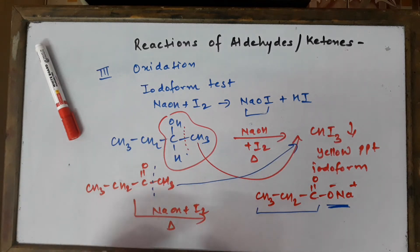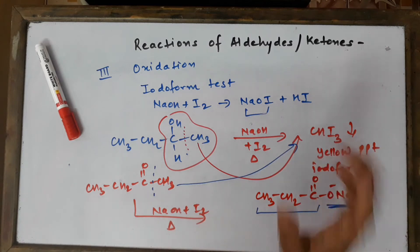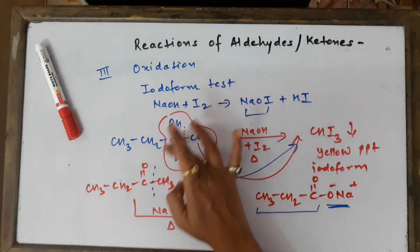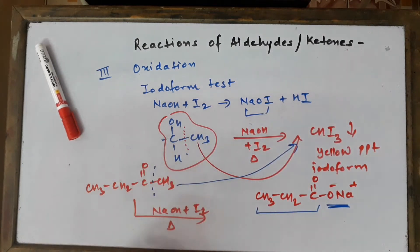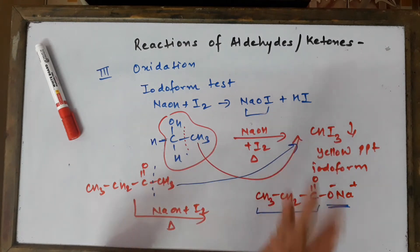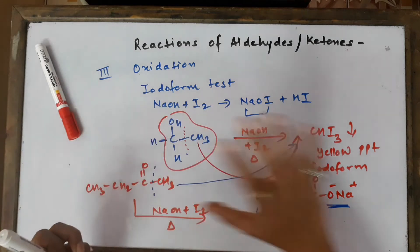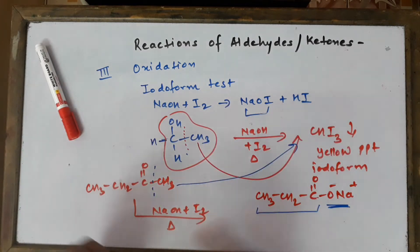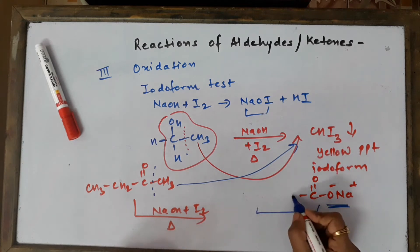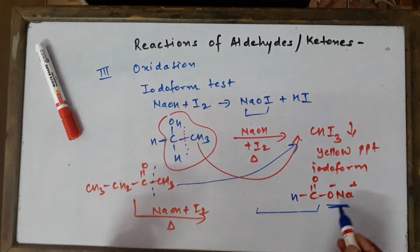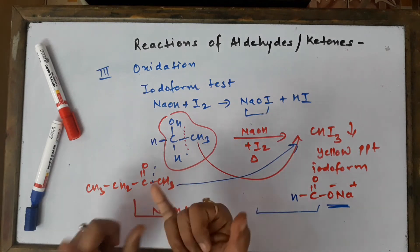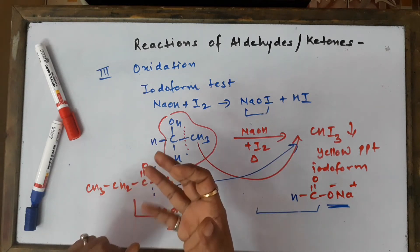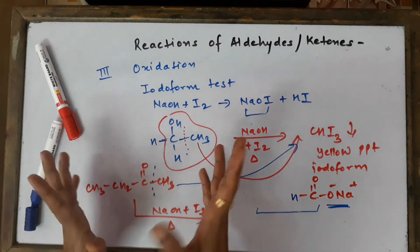The Iodoform test is a very simple oxidation reaction given only by selective compounds — those with the methyl alcohol or methyl ketone structural linkage. Importantly, ethanol (CH₃CH₂OH) is the only primary alcohol that gives this test. The product from ethanol gives sodium formate (HCOONa). All secondary alcohols with OH at the second position (methyl alcohols) show this test, but tertiary alcohols do not.